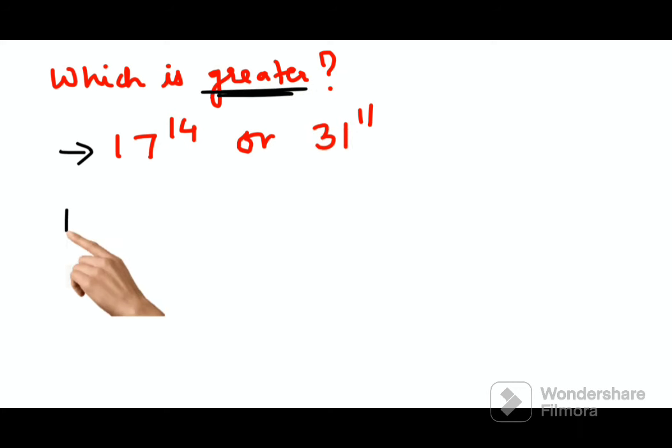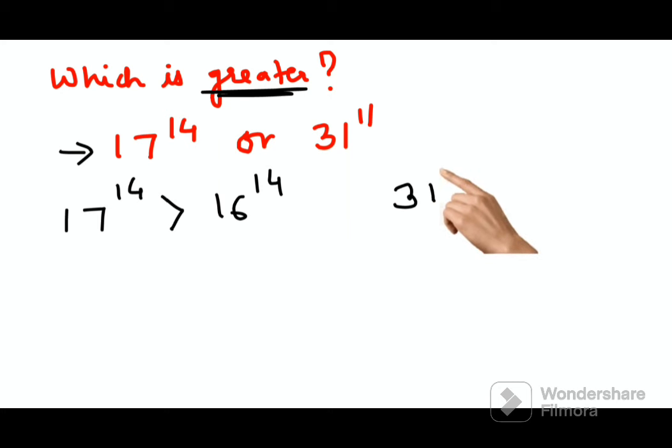In this case, 17 raised to 14 is obviously greater than 16 raised to 14. And 31 raised to 11 is less than 32 raised to 11, so obviously 32 raised to 11 is greater than 31 raised to 11. Now why did I do that?